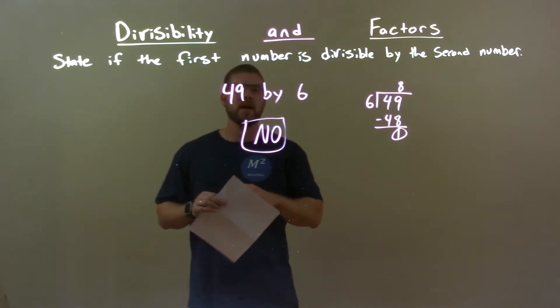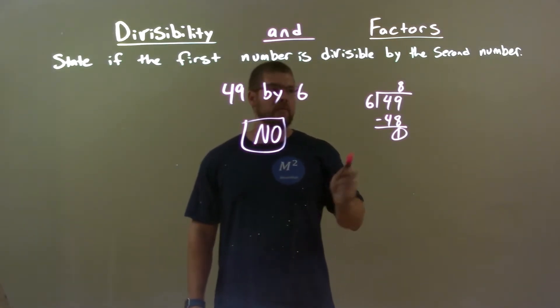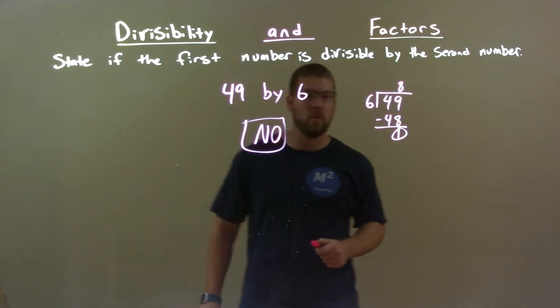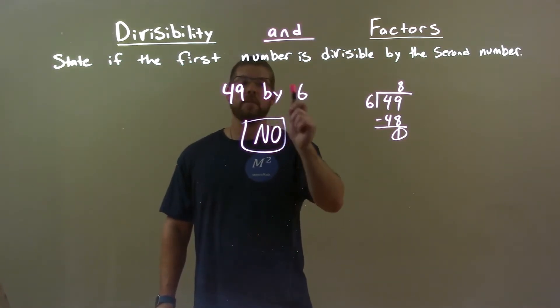Quick recap, we're giving 49 by 6. Well, 6 does not go into 49 evenly. We found it's 8 with a remainder of 1. So, the answer would be no, that 49 is not divisible by 6.